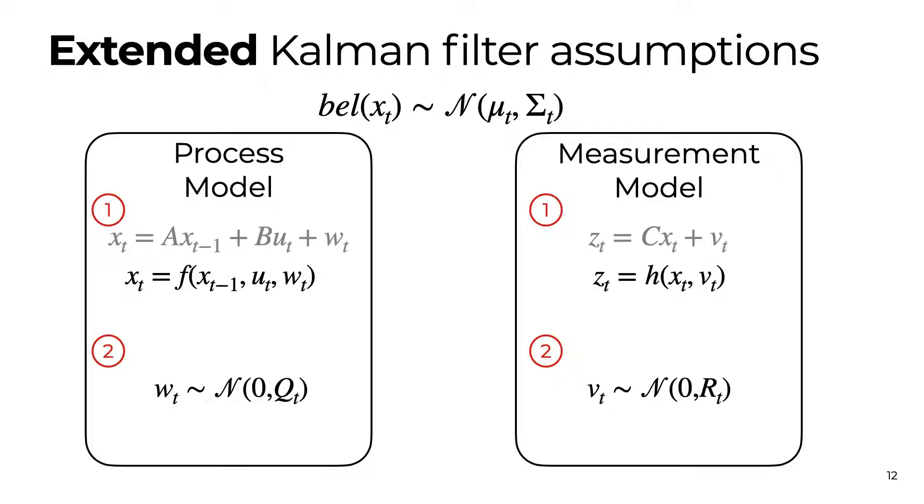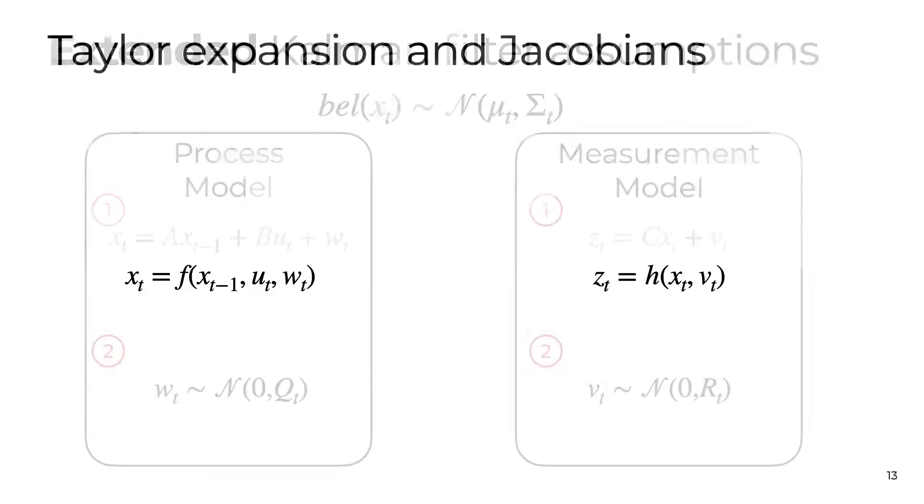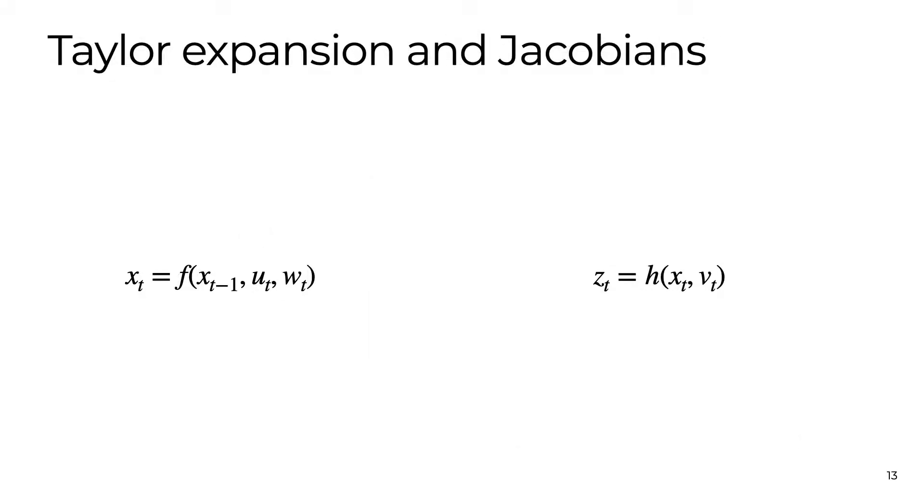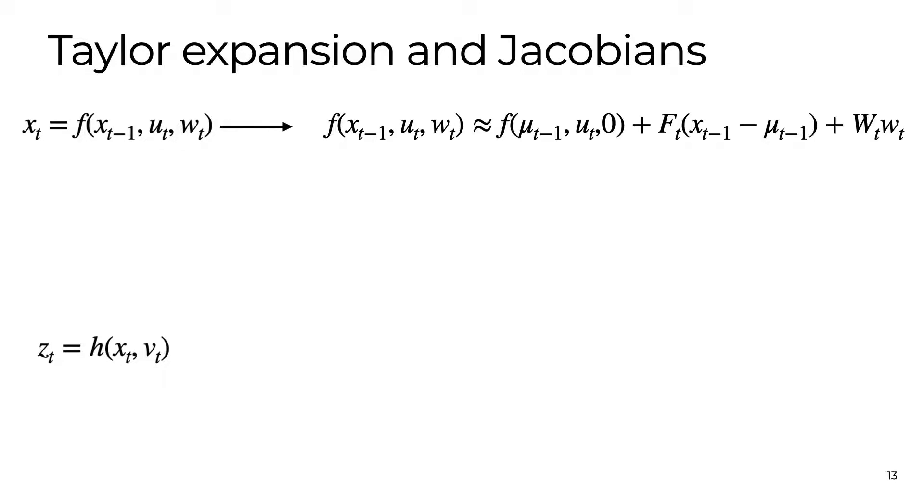In the case that we have nonlinear models but still assume that the noise is normally distributed, we can apply the extended Kalman filter, or EKF. The EKF uses a first order Taylor series expansion around the mean estimate at each time step for each of the process model and the measurement model.